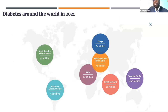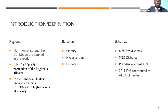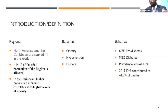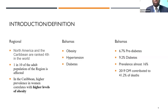Looking at diabetes incidence across the world, in North America and the Caribbean in 2021 there were about 51 million people affected. In our region, one in ten of the adult population is affected by diabetes, and Caribbean prevalence is higher in women because it correlates with obesity. Here in the Bahamas we have the highest incidence of obesity, the highest incidence of hypertension, and the highest incidence of diabetes in our region.